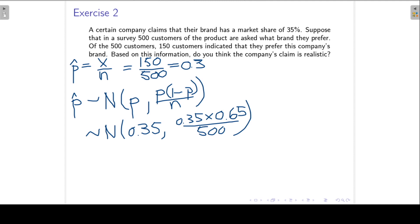If we've come this far, we can now continue to find the probability. We would like to know what is the probability to get a sample proportion of 0.3 or less if the company's claim is in fact valid or realistic. So we would like to find the probability that the sample proportion is less than or equal to 30 percent. And now we standardize.